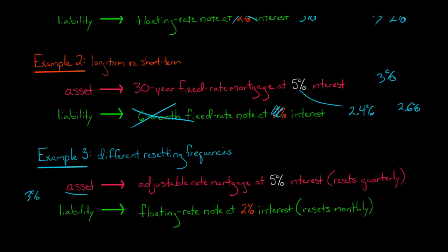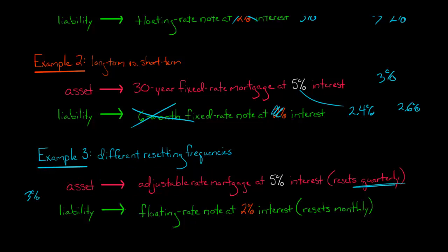What's the problem if both the asset and liability are floating rate? Well, the adjustable rate mortgage resets quarterly — four times a year — whereas the liability note resets monthly — 12 times a year. So the liability is going to be resetting faster every single month. If interest rates go up, the liability will reflect higher interest rates faster than the adjustable rate mortgage. They're both going to go up, but the liability is going to go up faster, and that is going to shrink the interest margin and affect the net interest income of the bank.